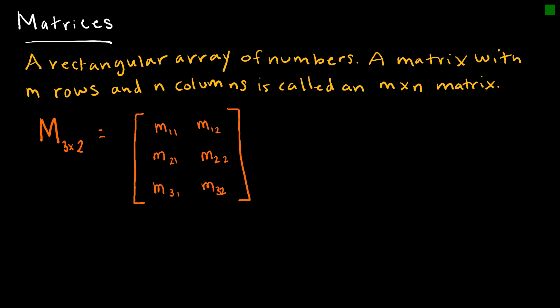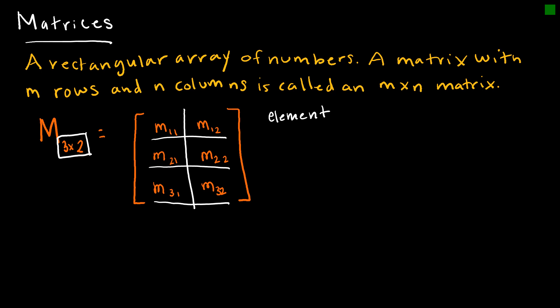A matrix is a rectangular array of numbers — and remember, rectangle includes squares — with M rows and N columns. This is how we denote the size. In my picture here, I've got three rows and two columns. The address of each element inside the matrix — for instance, m₁₁ — tells me that this value is in the first row, first column.